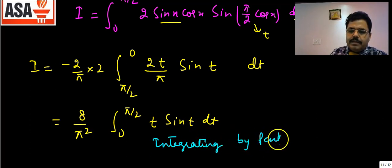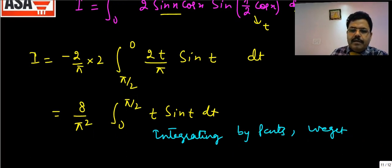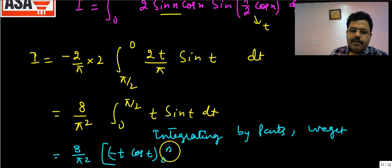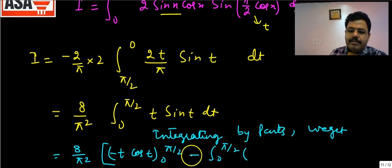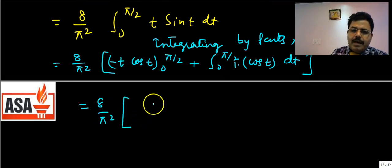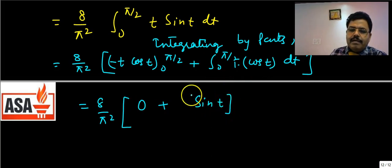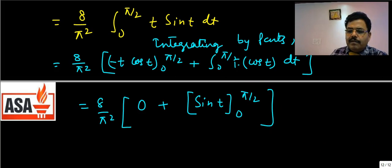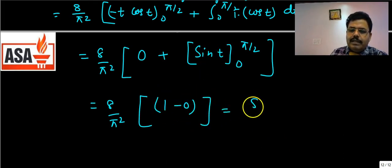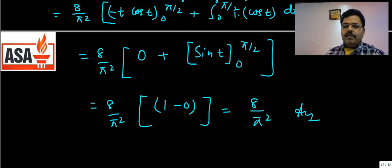Integrating by parts: (8/π²)·[t·(−cos t) from 0 to π/2 − ∫₀^(π/2)(−cos t) dt]. The first term: at t = π/2, −t·cos(π/2) = 0; at t = 0, it is also 0. So that term vanishes. The remaining integral is (8/π²)·∫₀^(π/2) cos(t) dt = (8/π²)·[sin t]₀^(π/2) = (8/π²)·(1 − 0) = 8/π². This is the final answer.